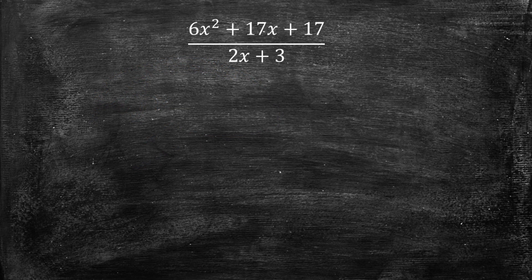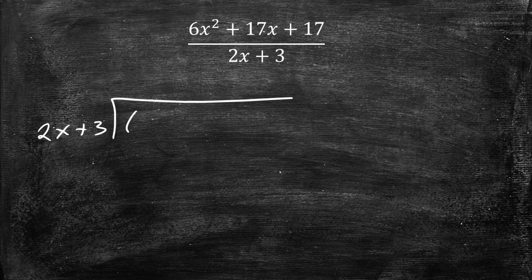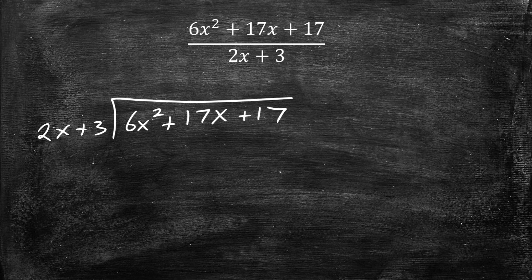Example number three. So we have this problem here and we want to divide. So we're going to take the denominator, the 2x plus 3, and the numerator is going to go on the inside, which is 6x squared plus 17x plus 17. And now all we do is we look at the front number, and we want to figure out how many times does 2x go into 6x squared? It goes in 3x times.